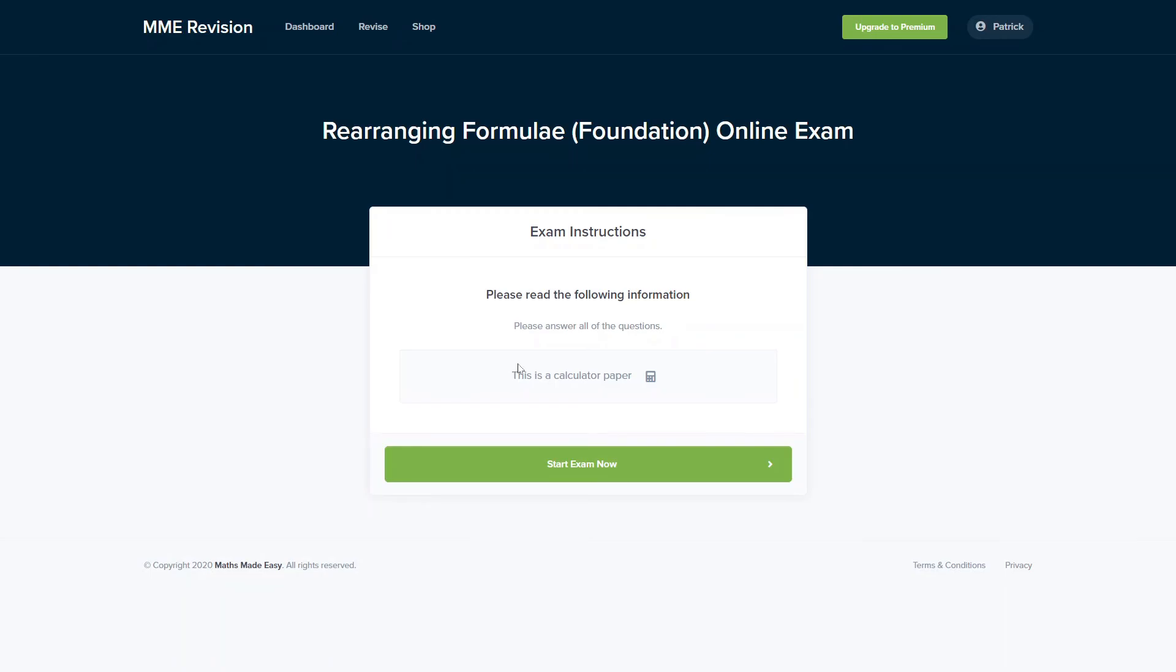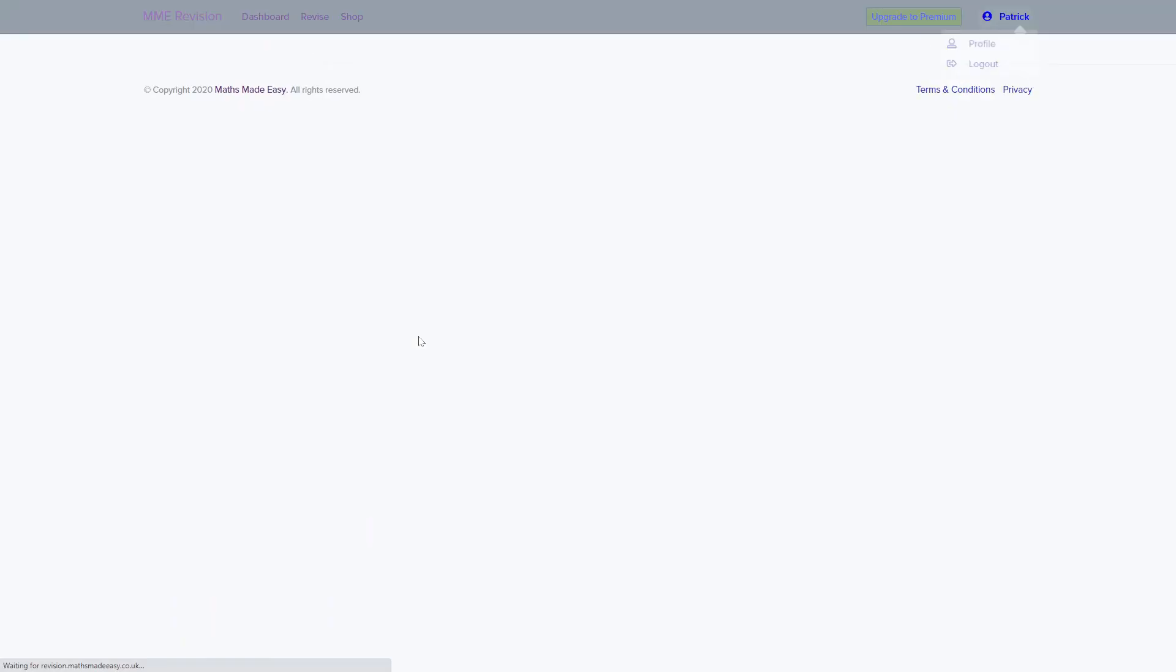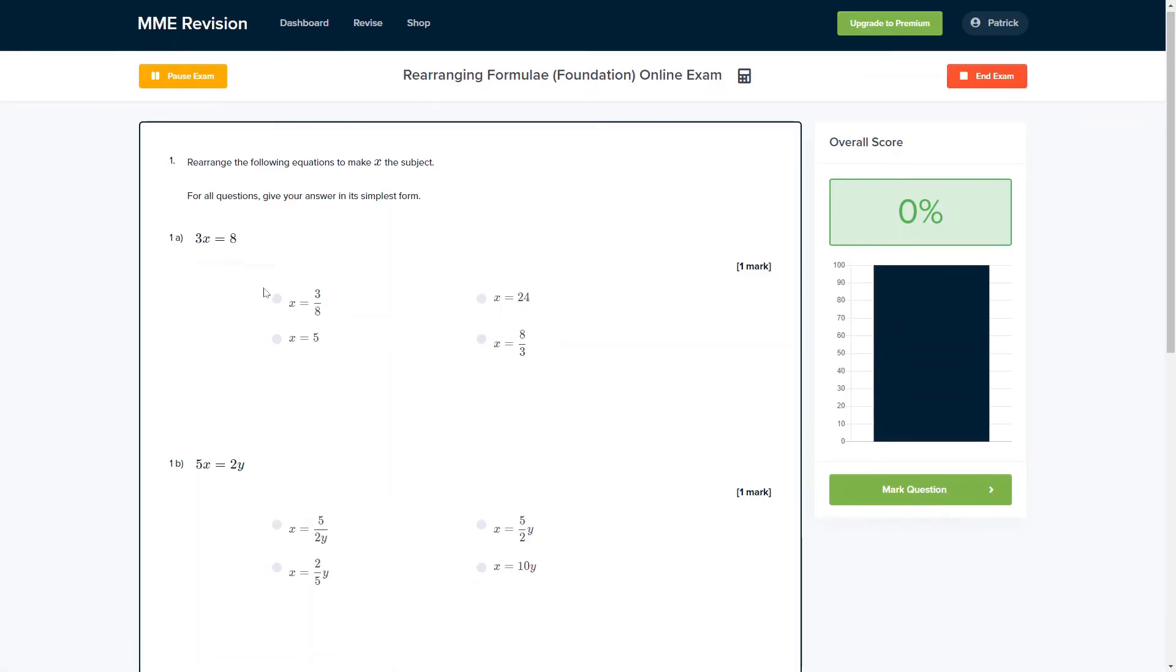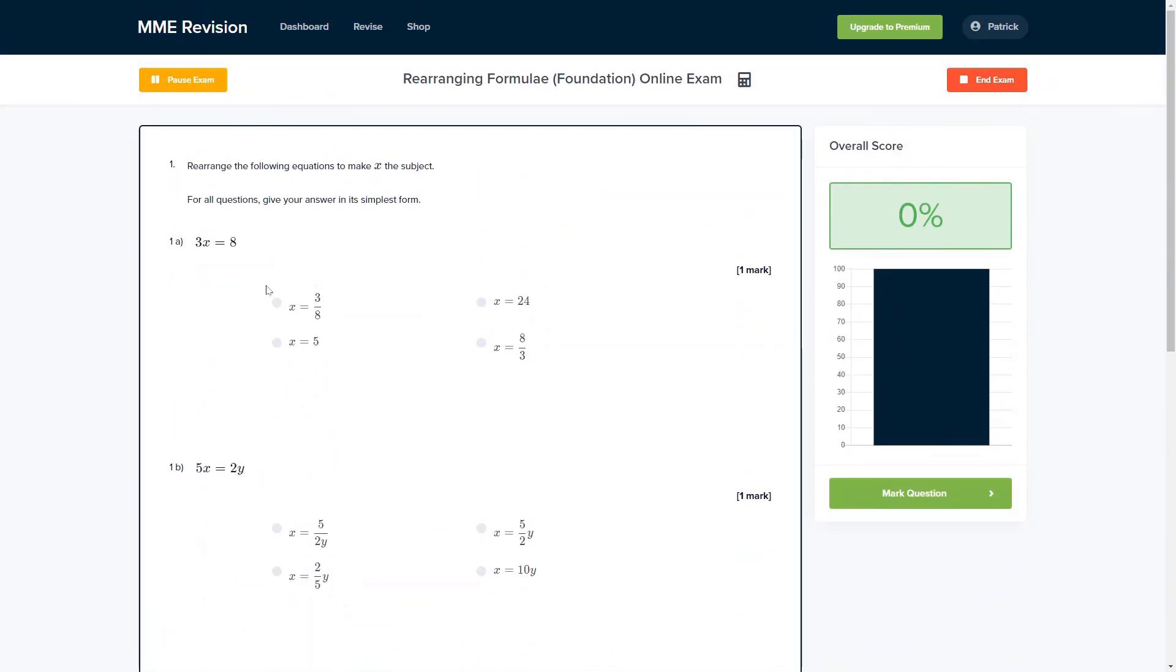Rearranging formula is definitely a skill that takes some practice. So why not get some practice with that online exam? This is available through our revision platform. If you take the test you'll find loads of different questions to have a go at and you'll get instant feedback on each and every one of them. You'll be able to see where you've gone wrong, see the work solutions and find out how you can improve ready for your exams. If you're interested you can click the link below and it will take you straight there.